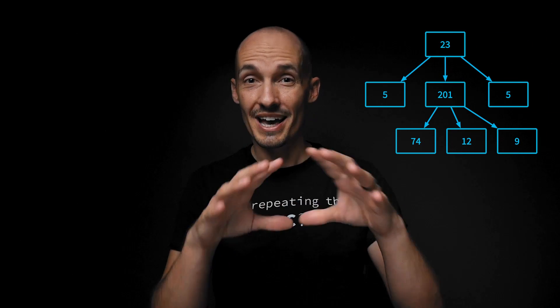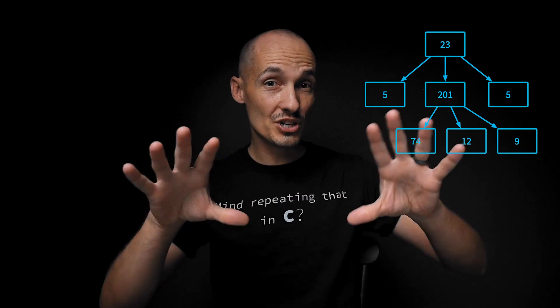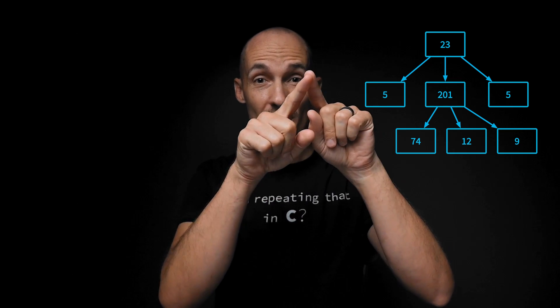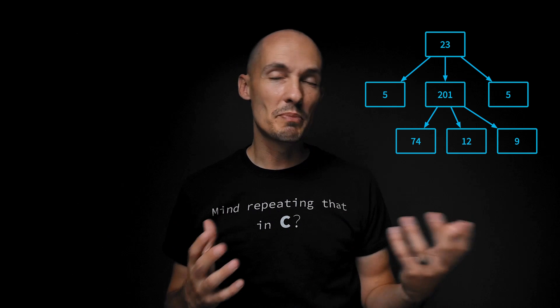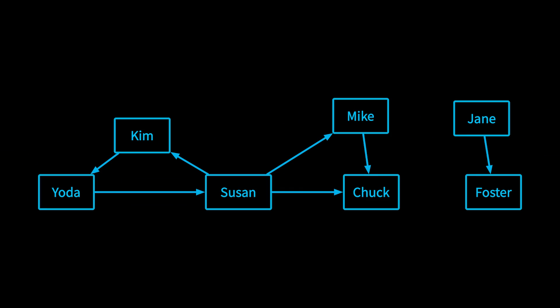A graph is different from a tree in that a tree always starts at a root and ends up at leaves, so you can always reach every node by starting at the root and following some path down to its leaves. In a tree, you have parent-child relationships. In a graph, things are much less constrained — there is no starting point, we don't have leaves and roots, we just have nodes and edges. Any node can be connected to any other, and we often use graphs to represent data sets where data is connected in different ways but it's not hierarchical.